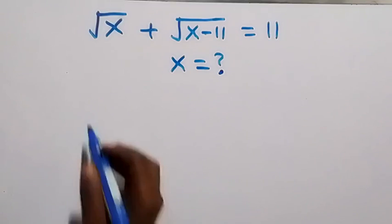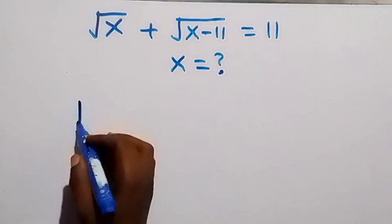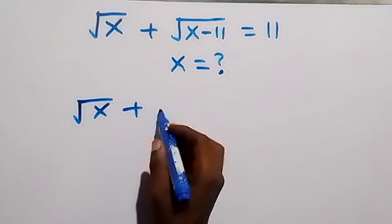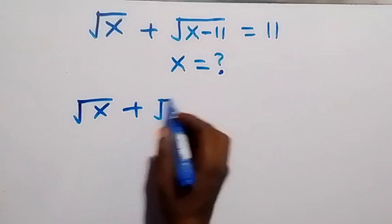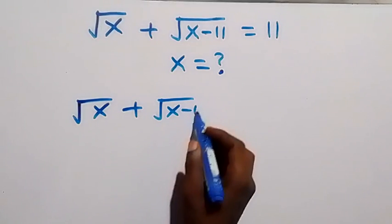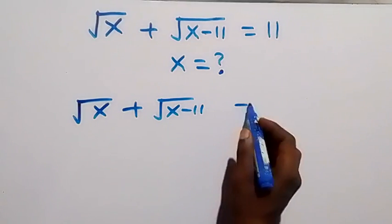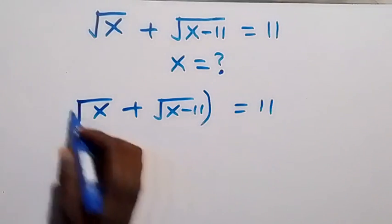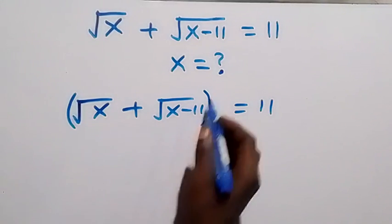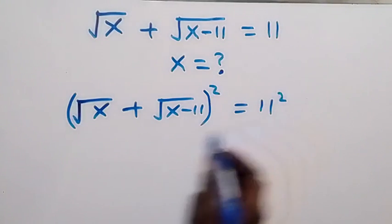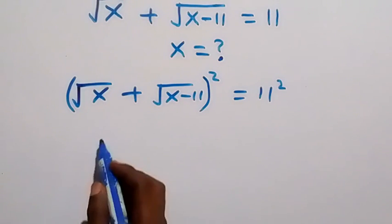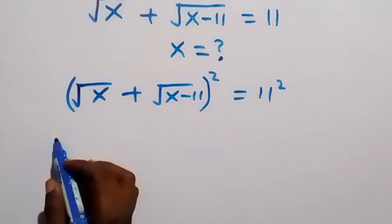Given that √x + √(x − 11) = 11, we want to square both sides. The square on the left side begins with (√x) squared...